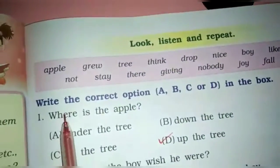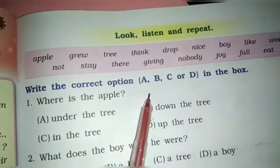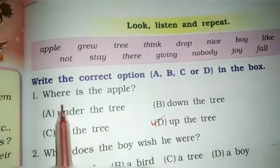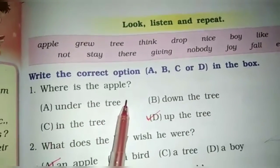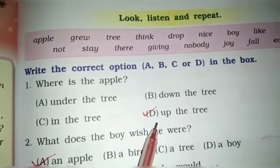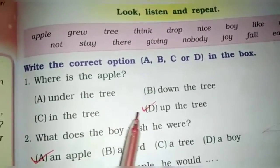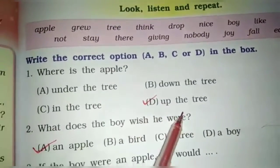Exercise. Write the correct options A, B, C or D in the box. Where is the apple? Apple कहाँ था? Tree के उपर था ना. So option D is correct answer, up the tree.